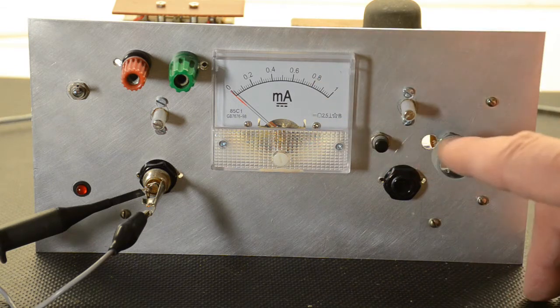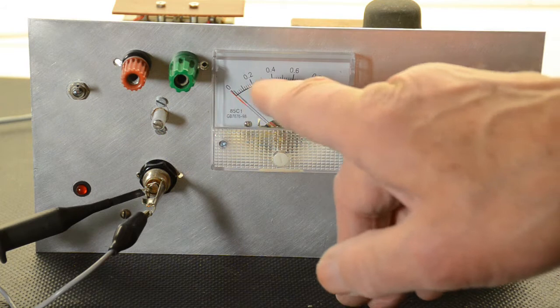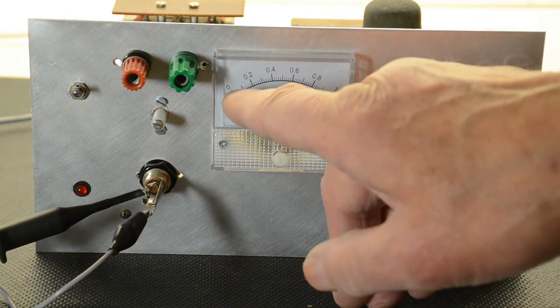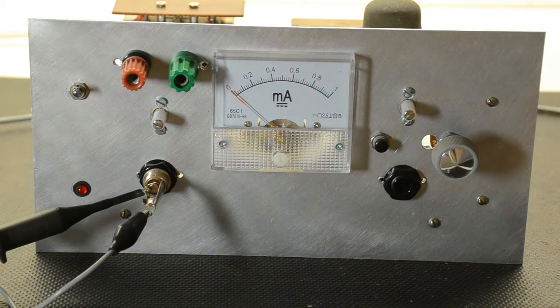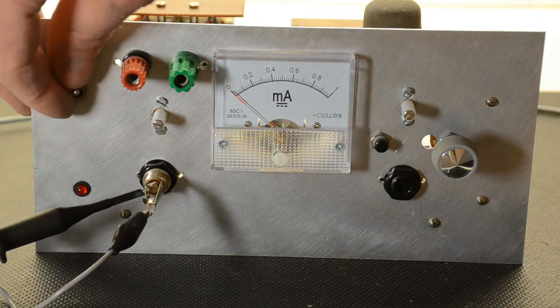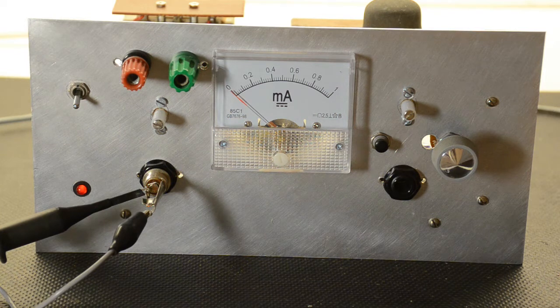We'll note when we adjust the bias, we'll have a very small range from nothing up to probably around about 1.5 milliamps. Let's turn it on, let it warm up and see.